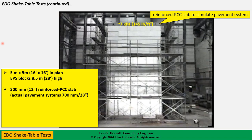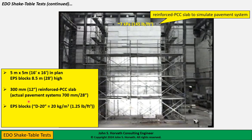The actual pavement systems used in Japan in the late 1990s were typically about 700 millimeters (28 inches) thick — including the wearing course, unbound aggregate, and the full pavement system. They were not able to simulate that full thickness due to limitations of the testing apparatus. The EPS blocks used were designated D20 blocks in Japanese nomenclature, with an average density of 20 kilograms per cubic meter — about 1.25 pounds per cubic foot — which was the standard in early Norwegian practice: one size fits all, regardless of application.